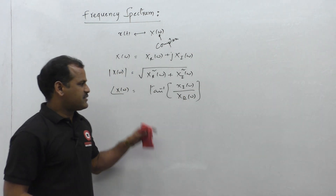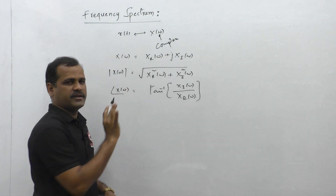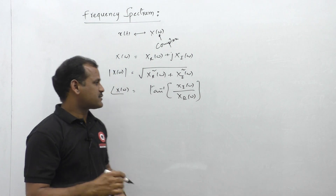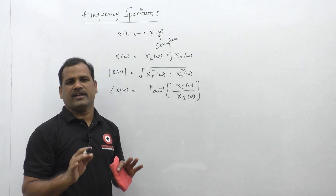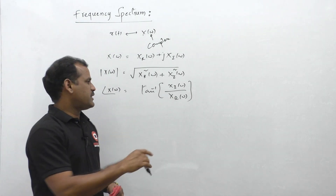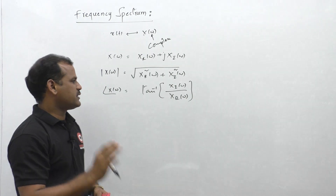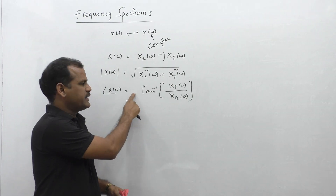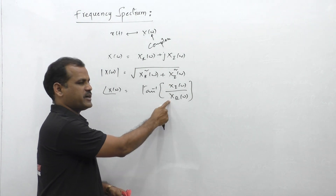Observe that there is no minus sign in the phase formula. Many times my students ask about a minus sign — they may have seen it written that way somewhere. But I am sure there is no minus sign for the phase of this complex quantity. It is exactly equal to tan inverse of the imaginary part divided by the real part.